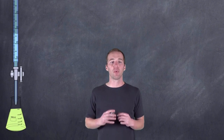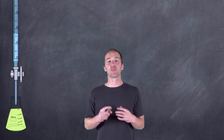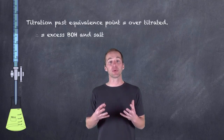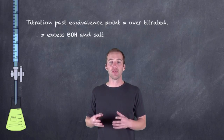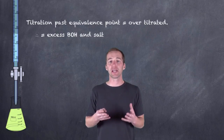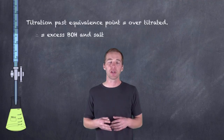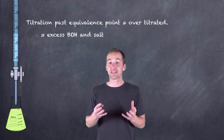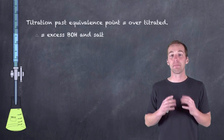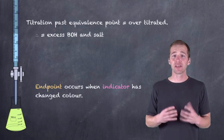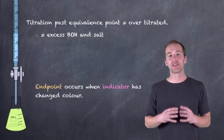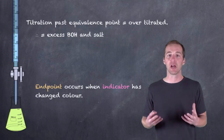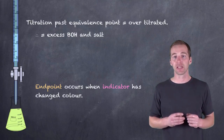We can also go past the point of equivalence — that is, we can over-titrate a solution. We can add more of the titrant than is needed to reach equivalence. Once we do that, we have over-titrated and we're going to have excess titrant. In our example, we would have excess base, thereby making the solution basic and having a really high pH. The whole point of these titrations is to establish the equivalence point so we can figure out the concentration of the unknown through stoichiometric calculations.